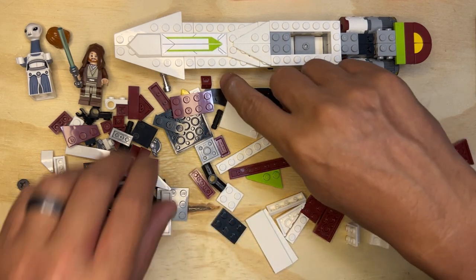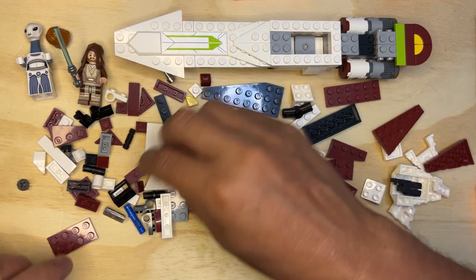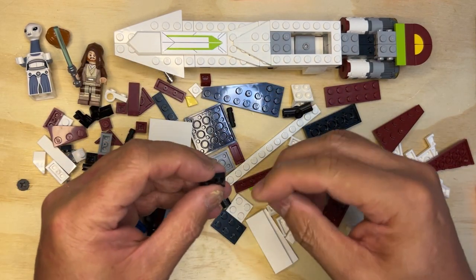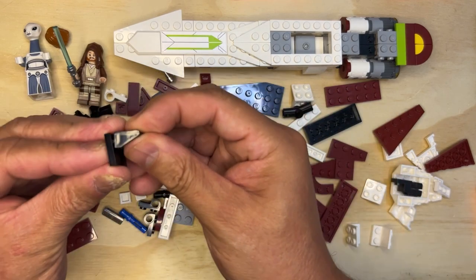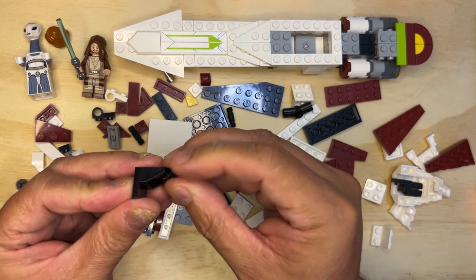I need these two white pieces like this. But first, before I do that, I'm going to grab this piece. And I'm going to grab this piece. I'm going to put these together like this.